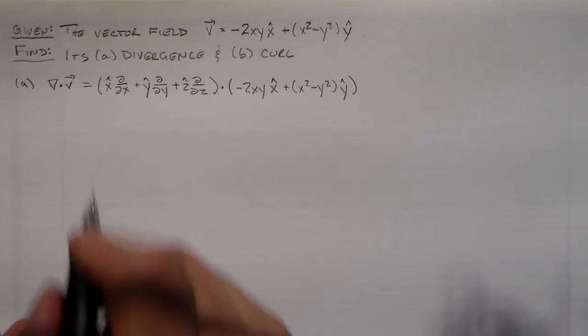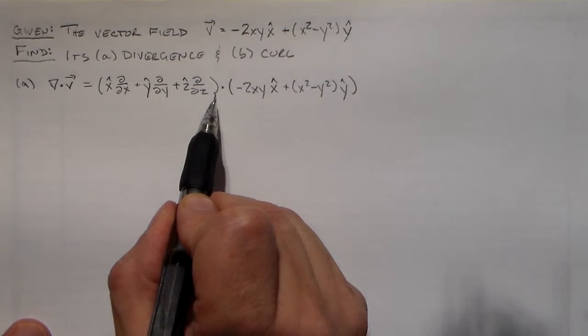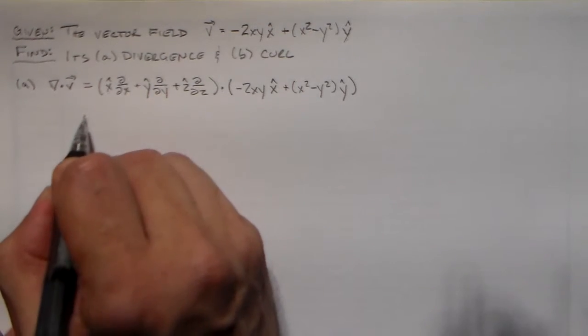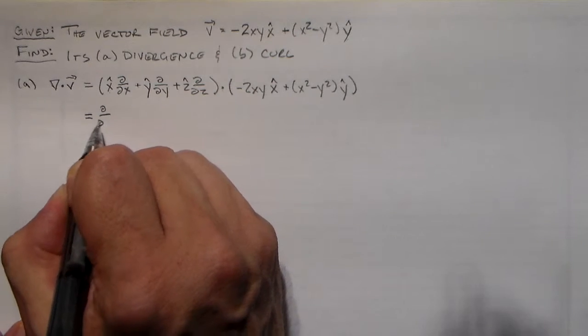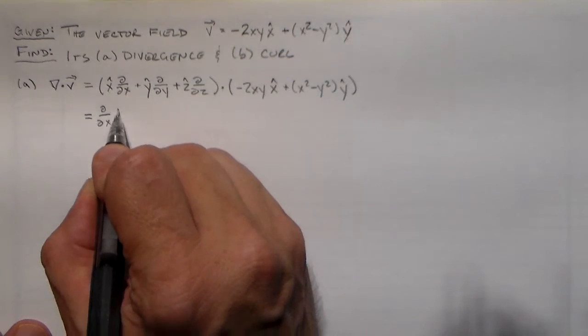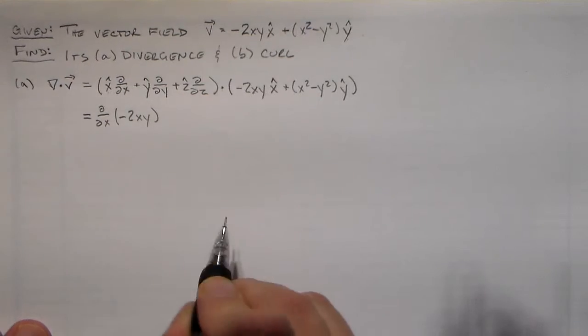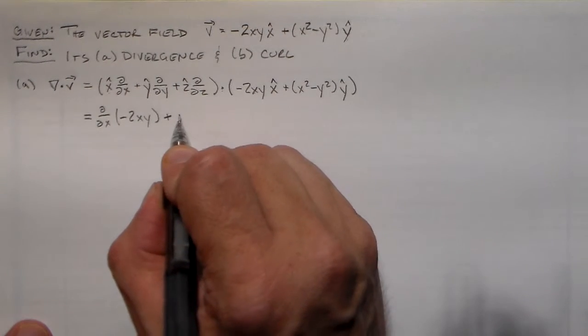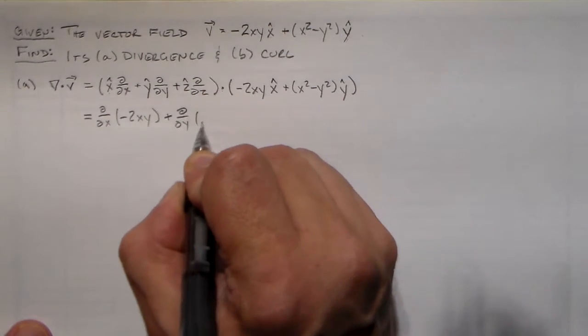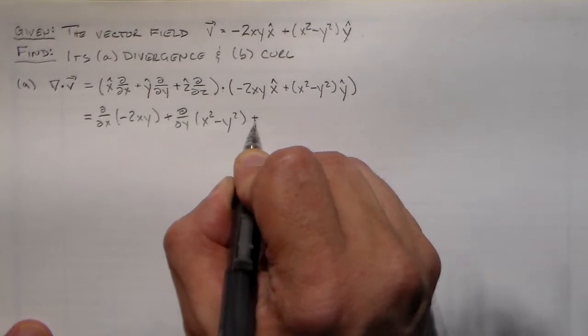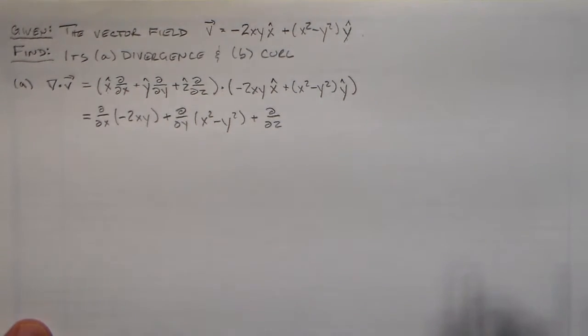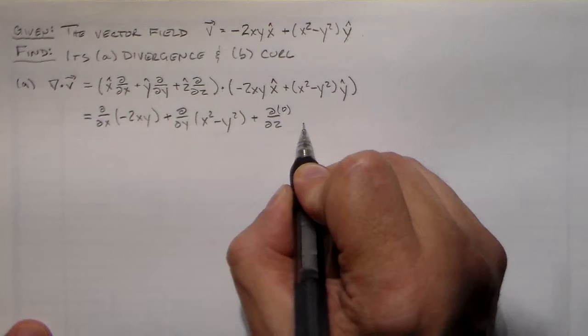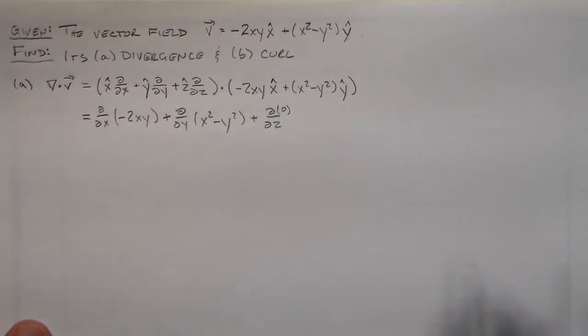So we've got this guy coming here, and now we just want to do this operator. So the dot product, remember, is just x component, x component, y component, y component, z component, z component, right? So we take the x derivative of the x component, minus 2xy, and then we add in the y component, the y derivative of the y component. So d/dy, x squared minus y squared. And then just for completeness sake, normally I just ignore this. I can take d/dz and multiply it by the z component, which is zero, which is always going to be zero. So I'm not really worried about it at the moment.